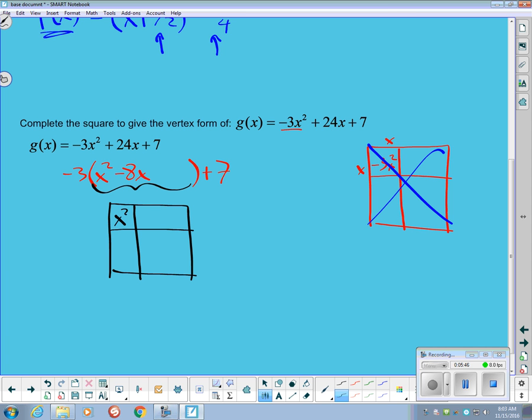So once again, the x squared goes there. The negative 8 has to be split. The negative 8x has to be split evenly between these two pieces. So each one of those will be a negative 4x. Filling in dimensions then, this has to be an x and an x. This would have to be a minus 4. That's a minus 4, so it's a square. And to complete that square, I need a 16 in there.